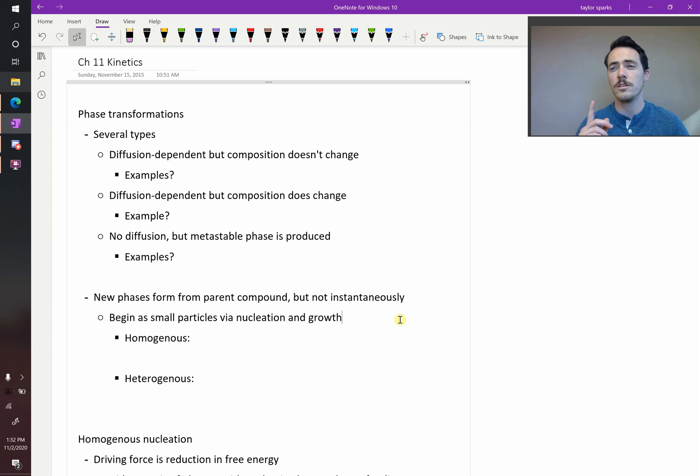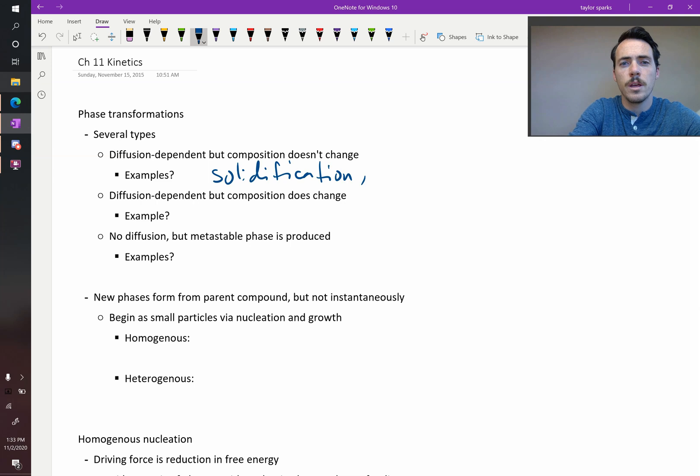The first one is diffusion-dependent but the composition doesn't change. So what would be an example of this? So the composition's not going to change, but atoms do have to move around. Well, this could be something like solidification. Solidification would fit this because the atoms start in a liquid form, they have to diffuse and move into some sort of arrangement, but the overall arrangement doesn't change. Another example might be a change from one allotrope to another. So diamond turning into graphite, for example, would be an example of a diffusion-dependent transformation where there's no change in the composition.